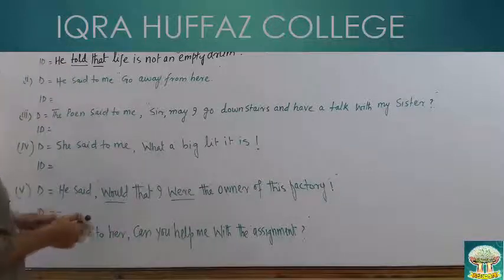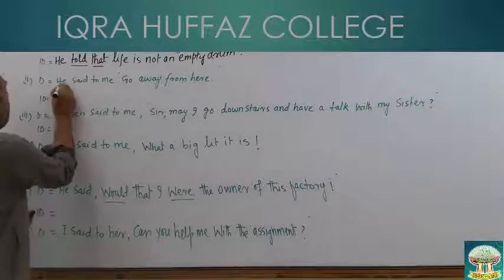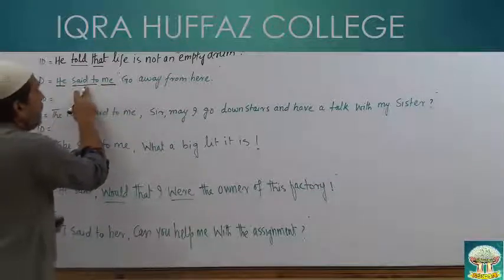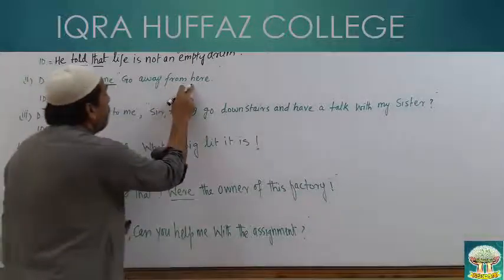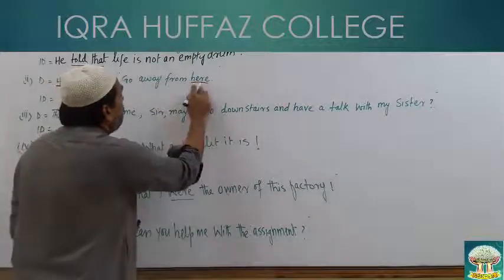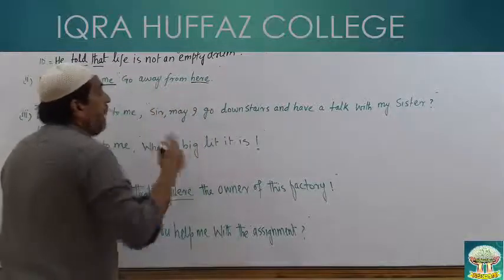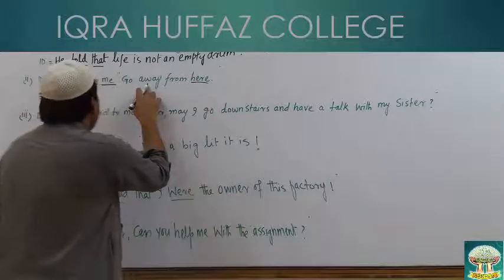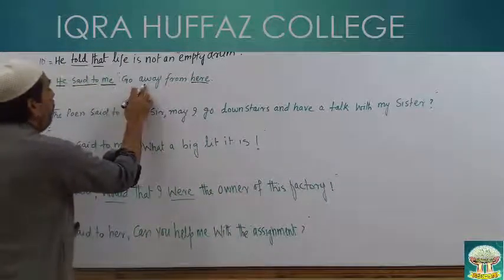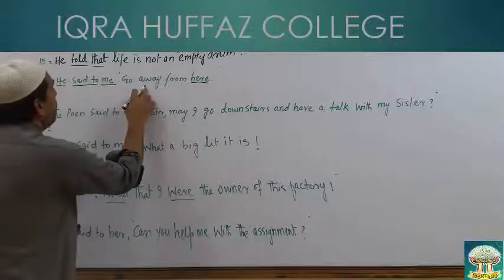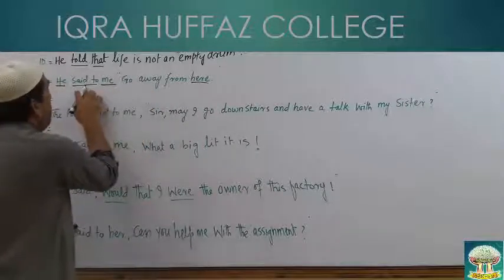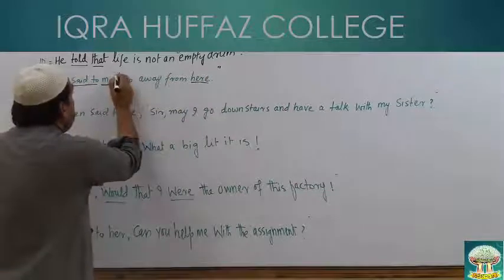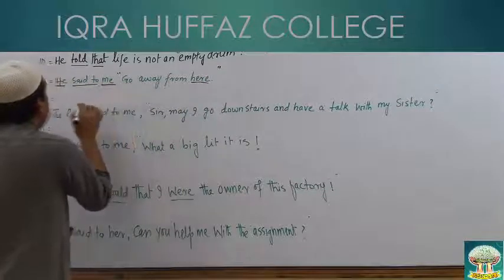दूसरा sentence: 'He said to me, go away from here.' He subject है, me object है, 'said to' reporting verb past tense में है। 'Go away from here' — यहां से दूर चले जाओ — एक तरह से हुकम है, या direction है। अगर हुकम लेंगे तो 'said to' 'ordered' में तब्दील होगा, क्योंकि type of sentence inverted comma के अंदर देख कर फैसला किया जाता है कि reporting verb कैसे तब्दील किया जाए।